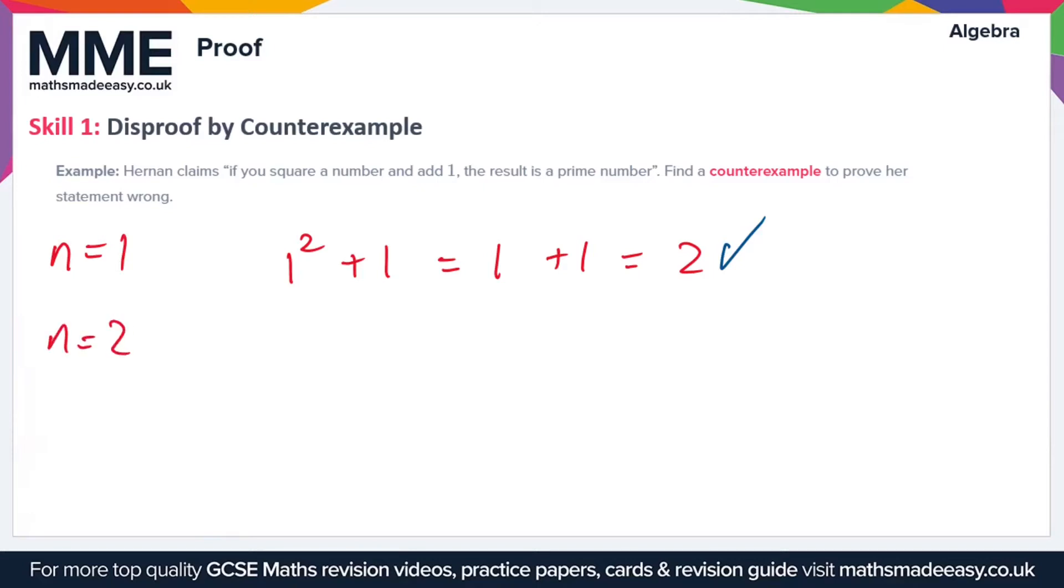If n equals 2 we have 2 squared plus 1 that's going to give us 4 plus 1 which is equal to 5. Is 5 a prime number? Well what are 5's factors? There's only 1 and itself so we move on.